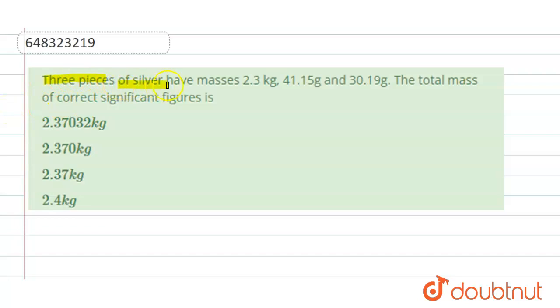Three pieces of silver have masses 2.3 kg, 41.15 grams, and 30.19 grams. The total mass of correct significant figures is. So three masses are given. One is, suppose, m1. m1 is 2.3 kg.